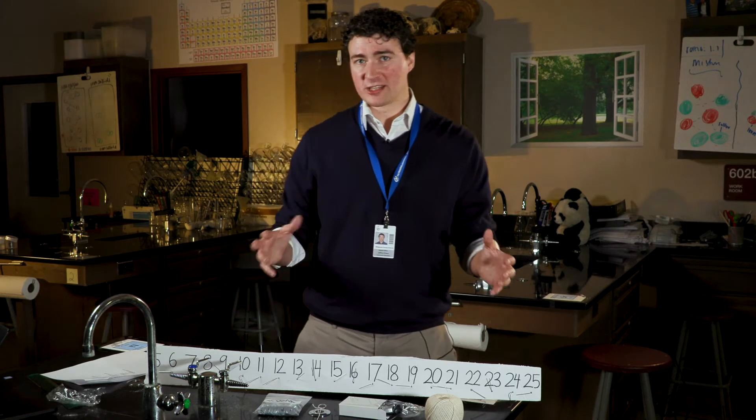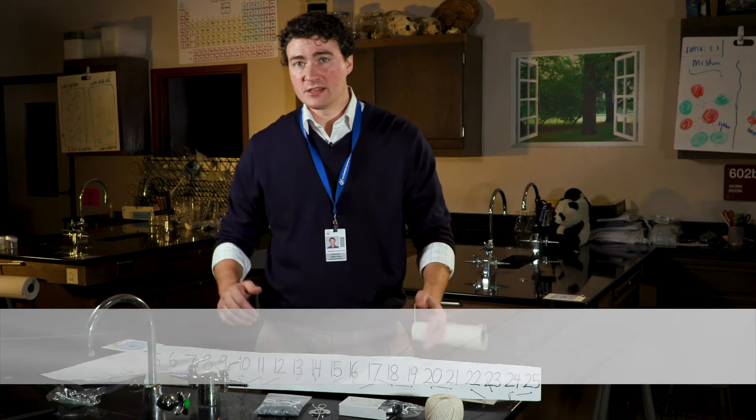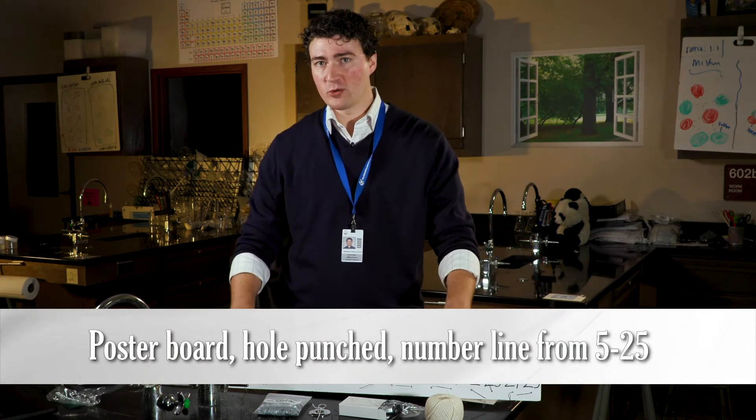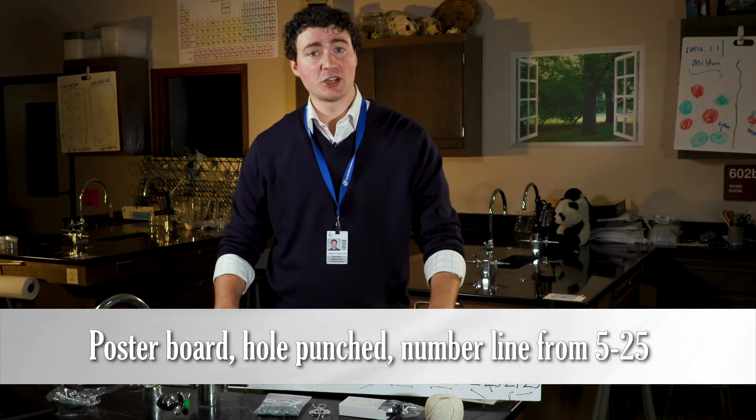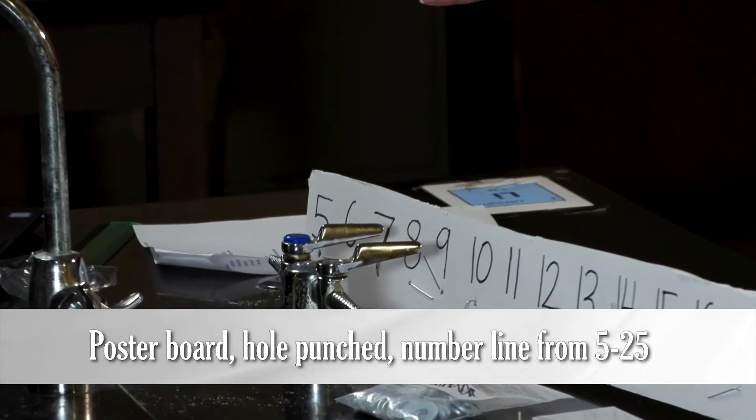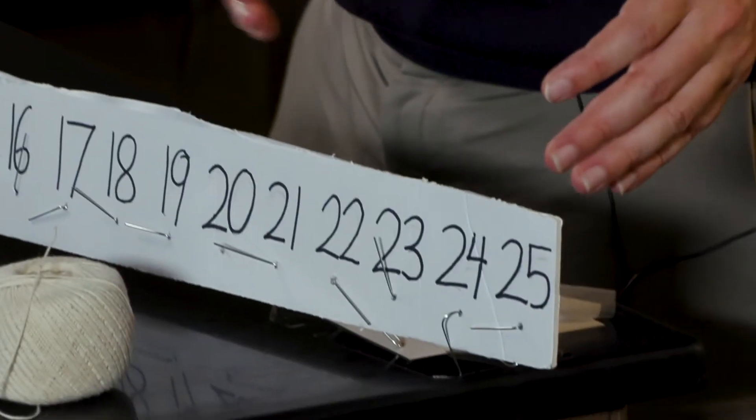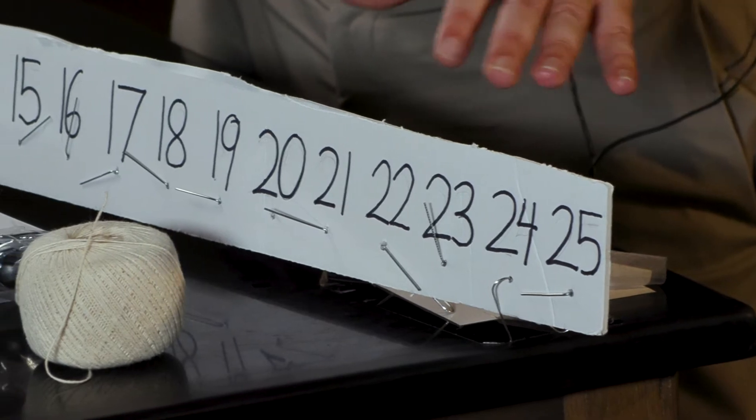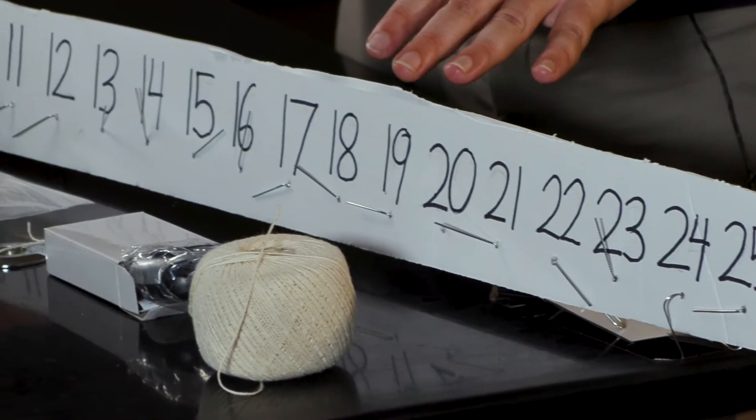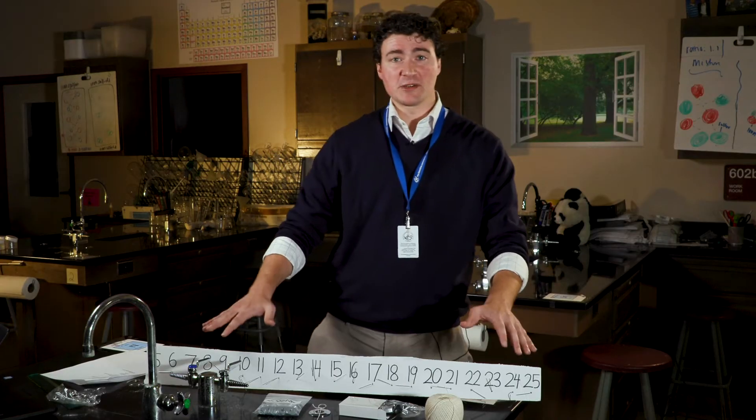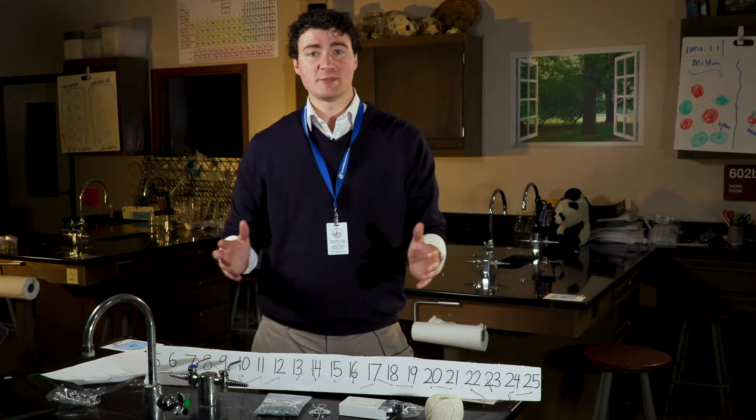Another object to prepare ahead of time is a cardboard or poster board hole-punched number line from the numbers 5 to 25 with paper clips from which the pendulums will hang. With these materials prepared, we're ready to begin.